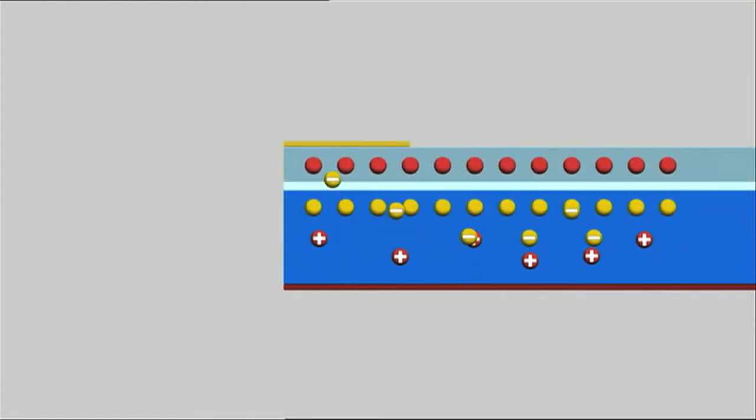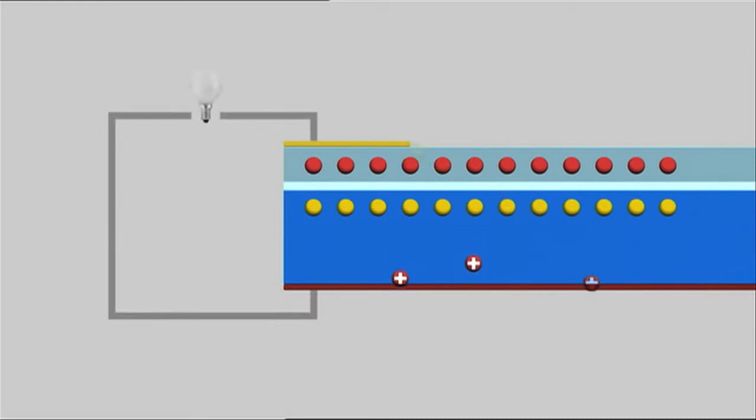At the interface between positive and negative charge layers, the free charge carriers created by the light are released. This generates an electric current.